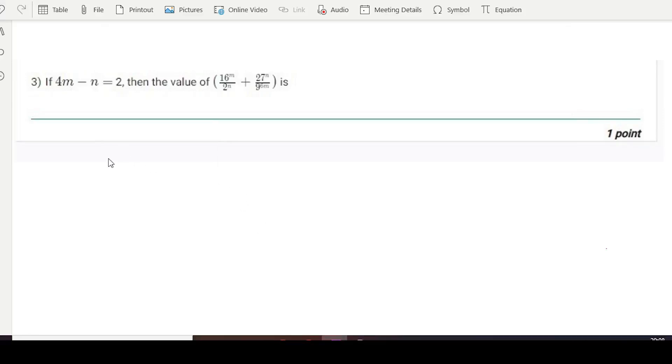Now moving to third question. One condition is given: 4m minus 2 is equal to 2. Then the value of 16^m divided by 2^n plus 27^m divided by 9^(6m). So we have to solve.